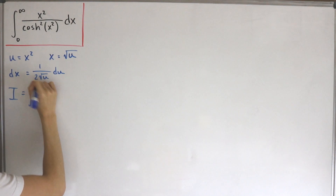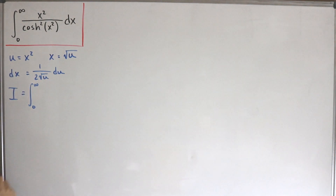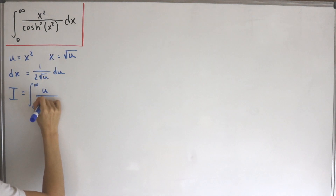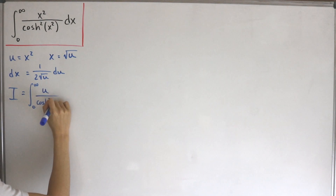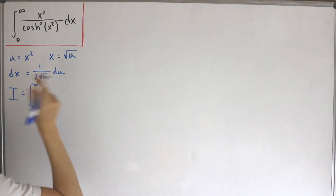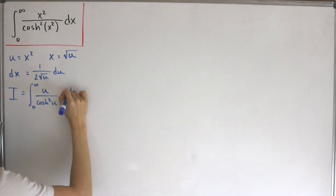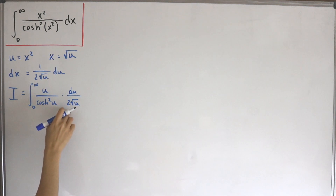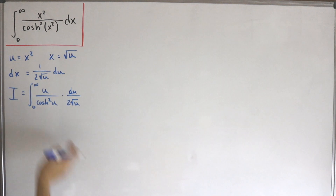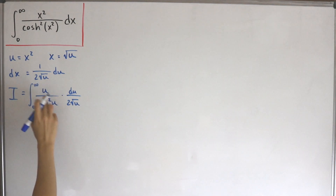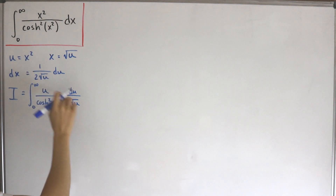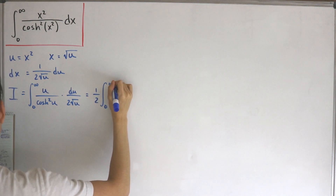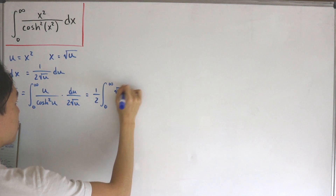After substitution we get u on the numerator and the hyperbolic cosine squared of u in the denominator, with the differential du divided by 2 times the square root of u. Factoring out the one-half and combining the u terms, we can write this as one-half multiplied by the integral from zero to infinity of the square root of u divided by the hyperbolic cosine squared of u, then du.